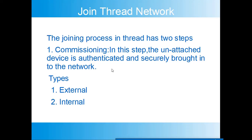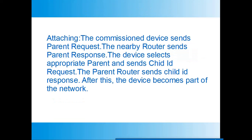How is the network formed, or how do you join a Thread network? The joining process has two steps. First is commissioning — in this step the unattached device is authenticated and then securely brought into the network. There are two types: external, where the joining device may lie on another network like Wi-Fi, and internal, where the joining device lies in the mesh network. After commissioning, the attaching process starts — the device sends a parent request, received by a nearby router which sends a parent response. The device selects the appropriate parent and sends a child ID request, which is accepted by the parent router sending a child ID response, after which the device becomes part of the network.